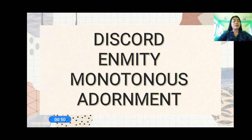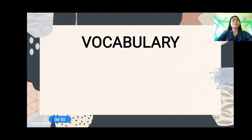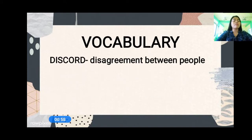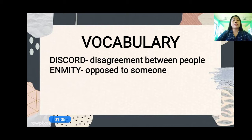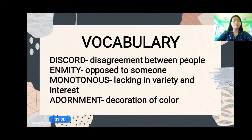So, do you know the meaning of the words? Let us know the meaning of the words. When we say Discord, this is disagreement between people. When we say Enmity, it is opposition to someone. When we say Monotonous, lacking in variety and interest. And when we say Adornment, decoration of color. So, those are the meanings of the words.